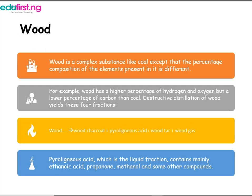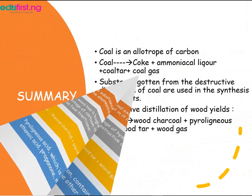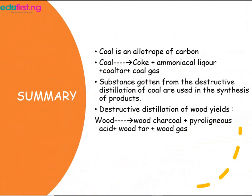Destructive distillation of wood yields four fractions: wood charcoal, pyroligneous acid, water, and wood gas. The pyroligneous acid is the liquid fraction and contains mainly ethanoic acid, propanone, methanol, and some other compounds.